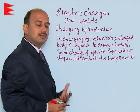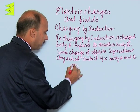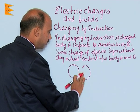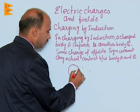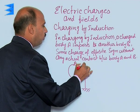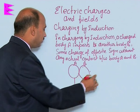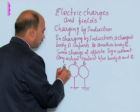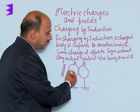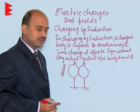Now see here how a body is charged by induction. Suppose you have taken two identical spheres like this. These two identical spheres A and B are placed on an insulated stand, so there is no flow of charges — they are metallic spheres.